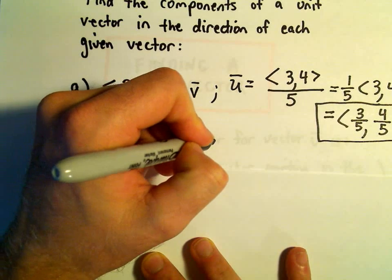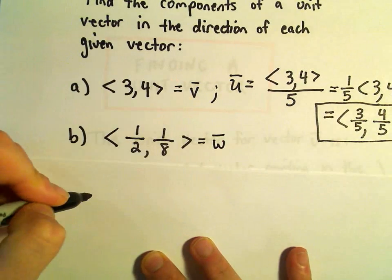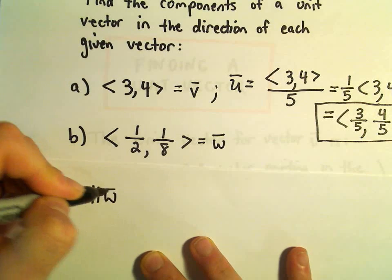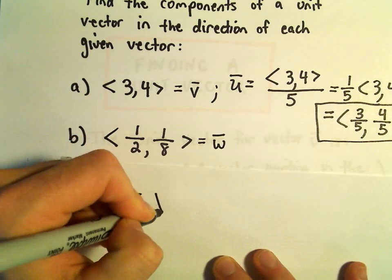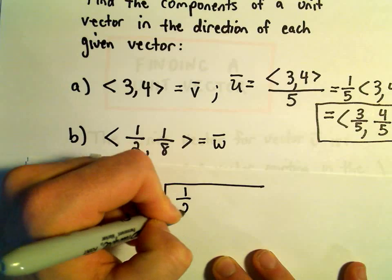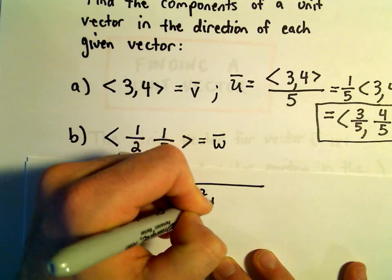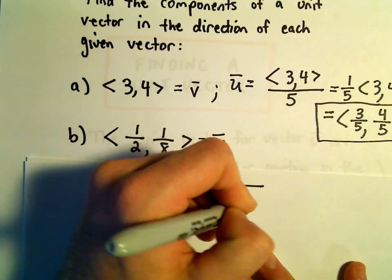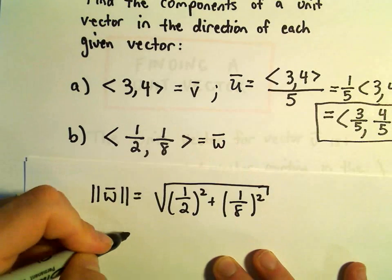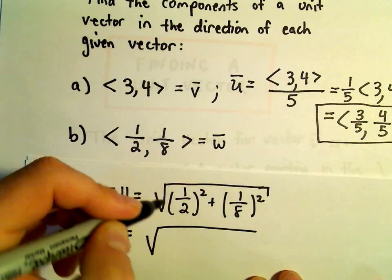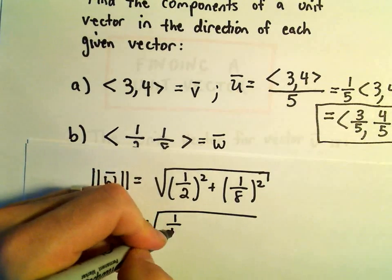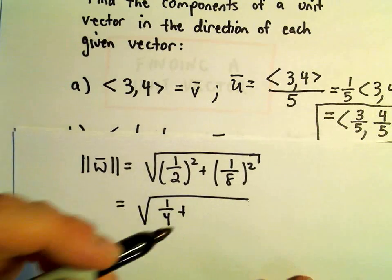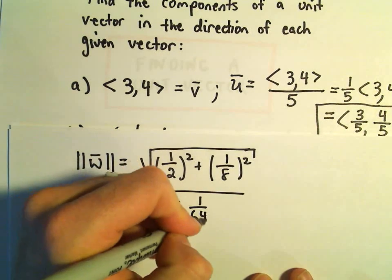Again, maybe I'll call this vector w. So, if we find the magnitude of vector w, again, we'll just take each component and square it. So, let's see, 1 half squared is going to give us 1 fourth, 1 eighth times 1 eighth is going to give us 1 over 64.